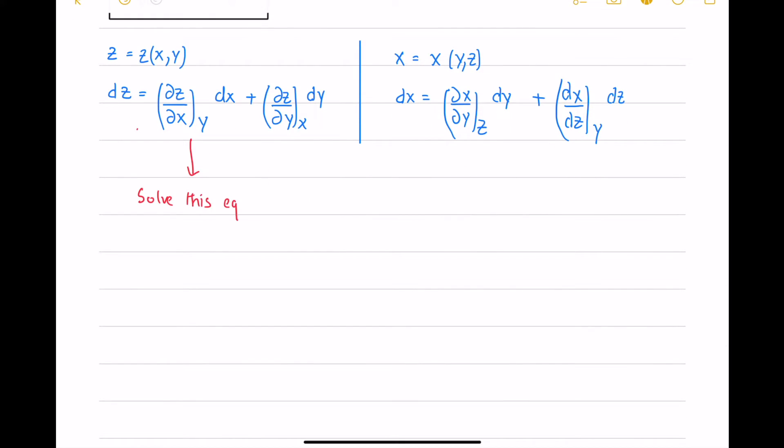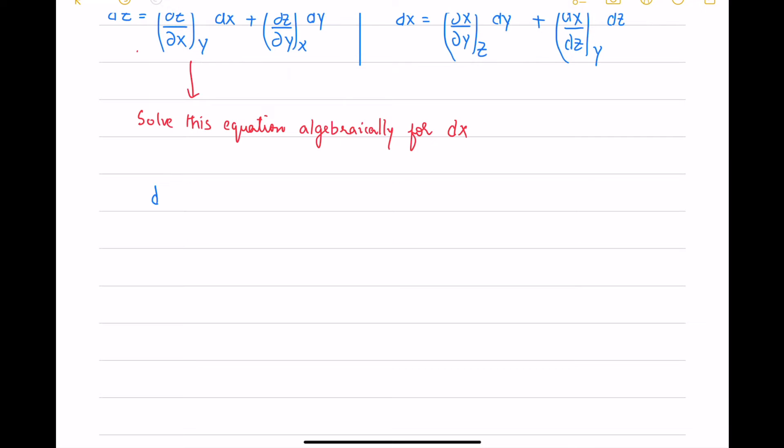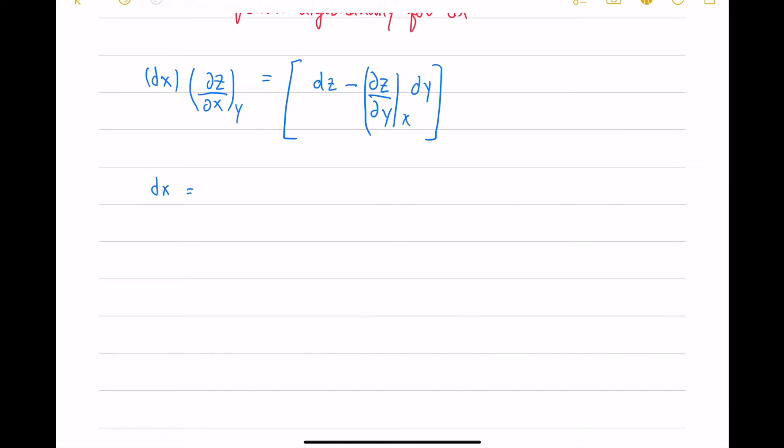Now, we solve the first equation for dx. It means put dx on one side and transfer all the coefficients and the additional terms to the other side. We subtract the dy term and then divide by the coefficient ∂z/∂x.